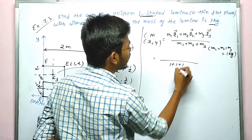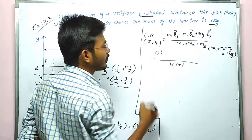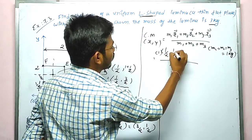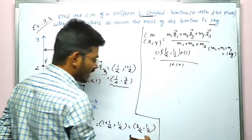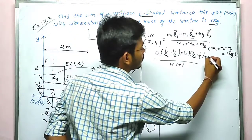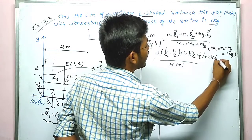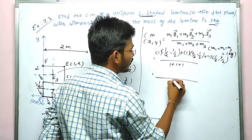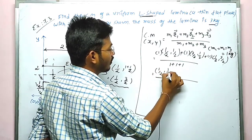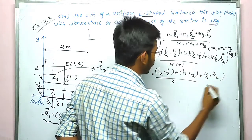Substituting the values, the denominator is 1 + 1 + 1 = 3. The numerator becomes: 1×(1/2, 1/2) + 1×(3/2, 1/2) + 1×(1/2, 3/2). This gives us x-components: 1/2 + 3/2 + 1/2, and y-components: 1/2 + 1/2 + 3/2.